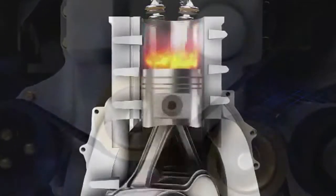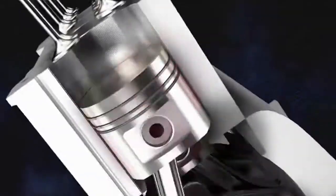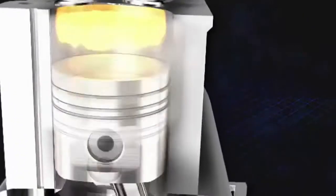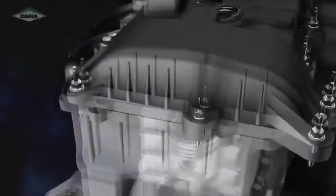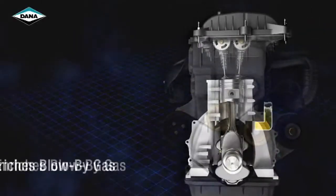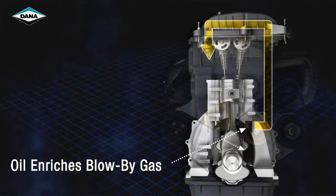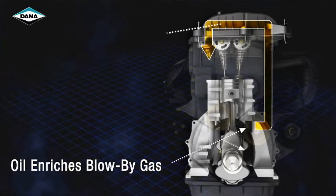With today's internal combustion engines, proper crankcase ventilation is vital. During engine combustion, approximately 2% of gases leak through piston rings and become blow-by gas. When oil from engine lubrication enriches this blow-by gas, it feeds back into the air intake only to burn off during combustion.